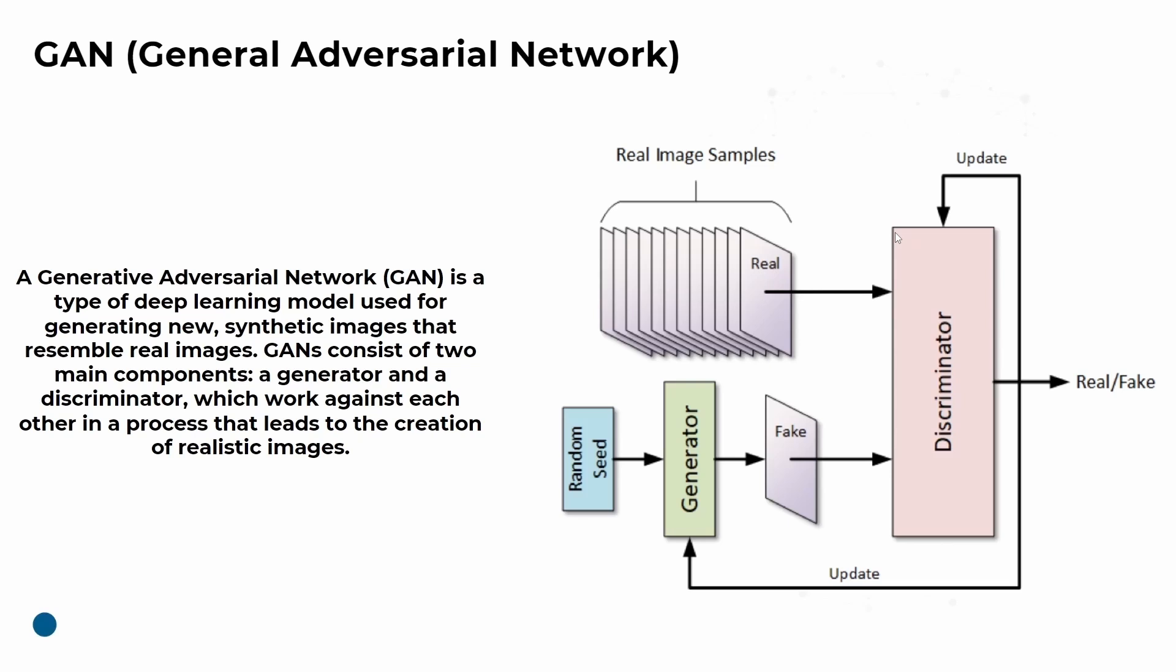The generator's job is to create new images from random noise. These images start off random, but as training progresses, the generator learns to create images that increasingly resemble real images. The generator takes random input - often a vector of random numbers - and applies a series of transformations to produce an image. This image is passed to the discriminator.